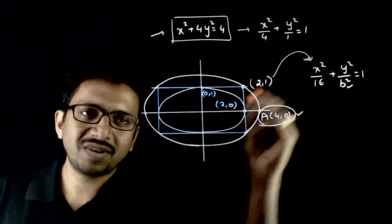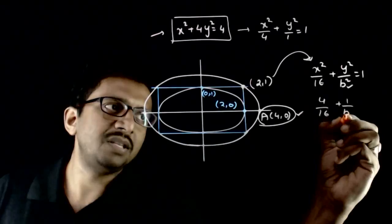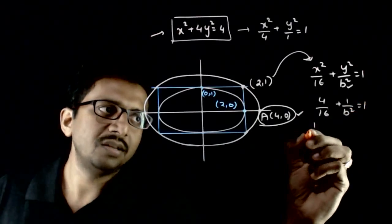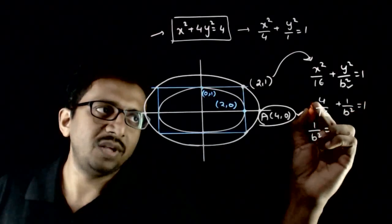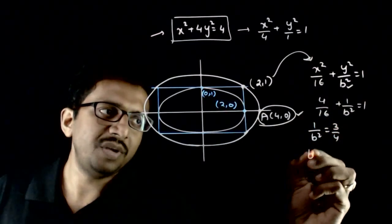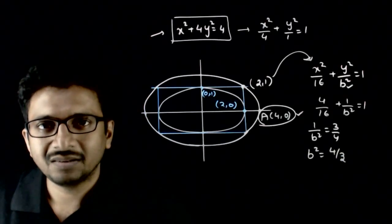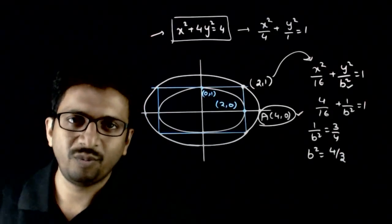Hence, (2,1) has to satisfy this equation. So 4/16 + 1/b² has to be equal to 1. So 1/b² has to be equal to 1 - 1/4, which is 3/4. So b² has to be equal to 4/3. b² = 4/3.